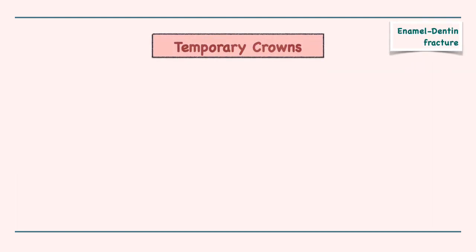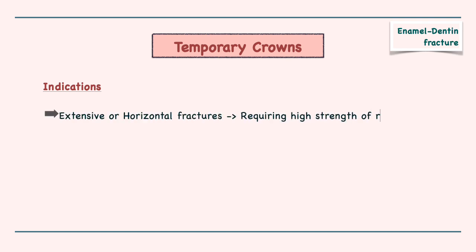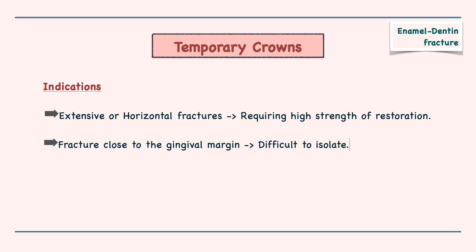Temporary crowns are indicated when there is extensive or horizontal fracture requiring higher strength of restoration, or when the fracture is too close to the gingival margin and is difficult to isolate.